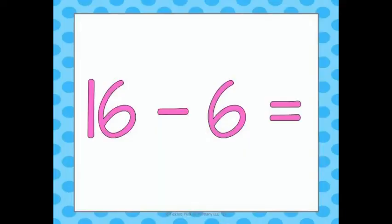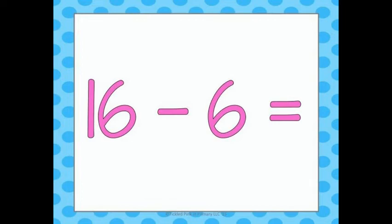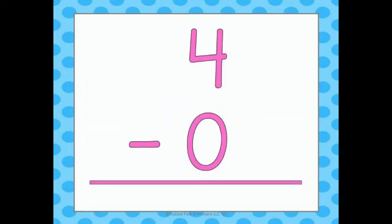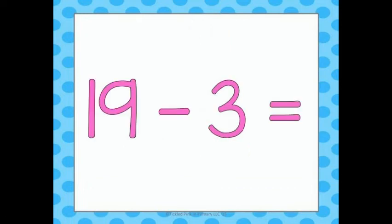16 minus 6 is 10. And I probably should have mentioned — you guys need to stand up for this because you're going to be doing some exercises in a minute. One more time: 16 minus 6 equals 10. 10 plus 9 equals 19. 12 plus 7 equals 19. 4 minus 0 equals 4. 19 minus 3 equals 16. You guys are on a roll.